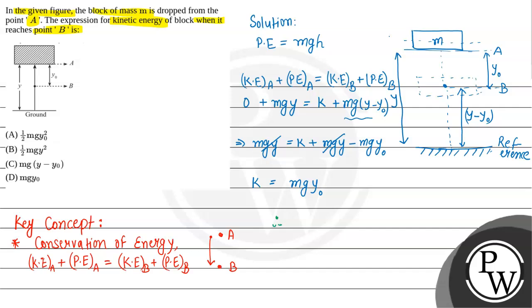Finally, we can write that kinetic energy at point B equals M times G times Y naught. This is the final answer for the given question. If you see the options given, option D is the correct choice. I hope you understood the solution.